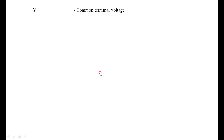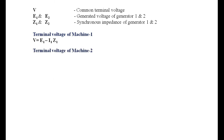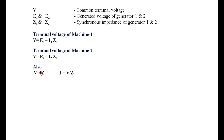Now we will derive the equation for load sharing between alternator 1 and 2. V is the terminal voltage, E1 and E2 are the generated voltages, Z1 and Z2 are the synchronous impedances of generators 1 and 2. The terminal voltage of machine 1 is E1 minus I1·Z1, and for machine 2, V equals E2 minus I2·Z2. Across the load, V equals I·Z_L.